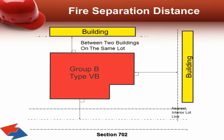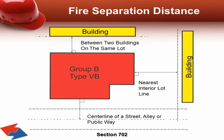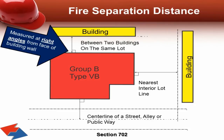Next, the fire separation distance can be measured from the building face to the closest interior lot line. And last, the fire separation distance can be measured from the building face to the center line of a street, alley, or public way. Please note that all distances shall be measured at right angles from the face of the building wall.